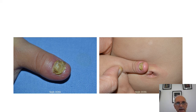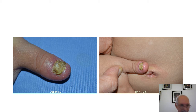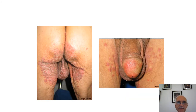Here we have an onychodystrophy of the thumb — it was the only visible lesion. But if we look at other parts of the skin, we find an erythematous squamous lesion on the navel — it was psoriasis. This is also often misdiagnosed as tinea cruris, but it was psoriasis.